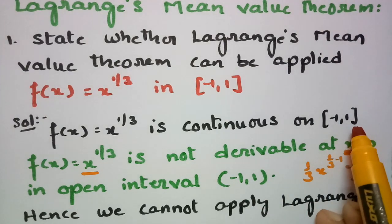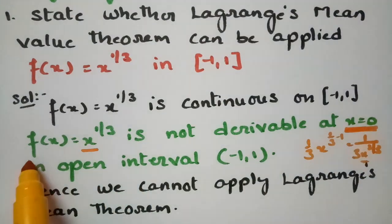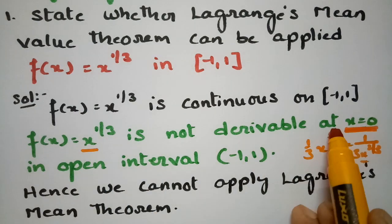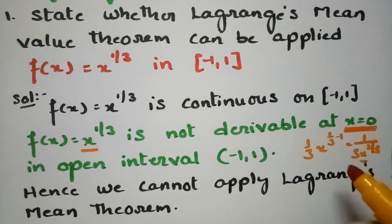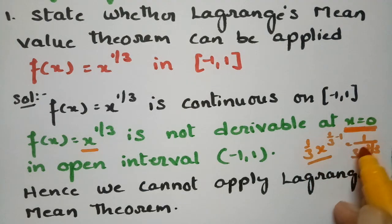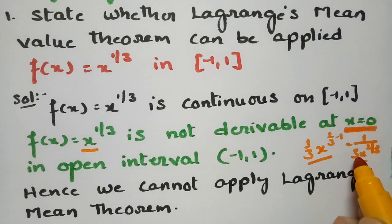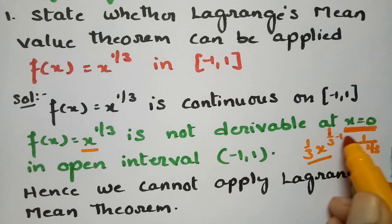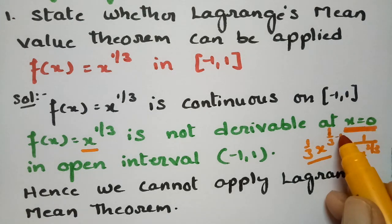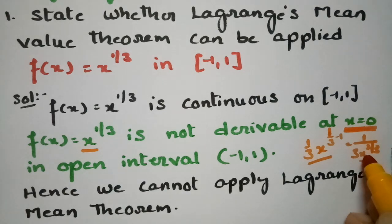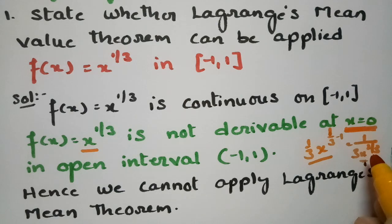It is continuous on [-1, 1]. Now checking differentiability: f(x) = x^(1/3) is not derivable at x = 0. The first derivative using the power rule n·x^(n-1) gives (1/3)·x^(1/3 - 1) = (1/3)·x^(-2/3). At x = 0, this becomes 1/0, which is infinite.